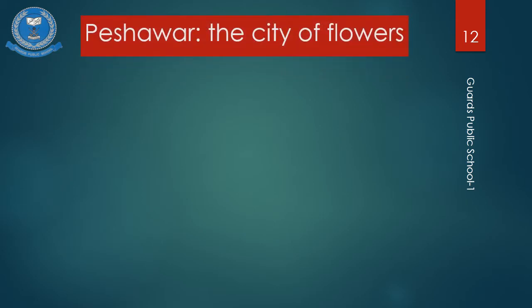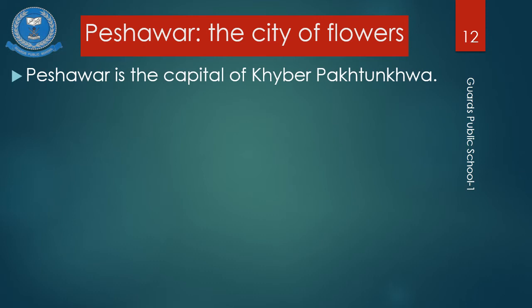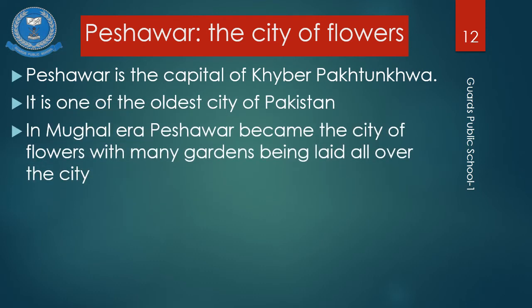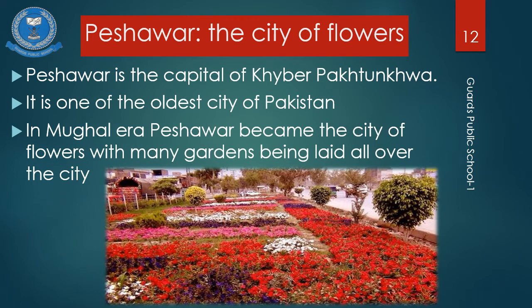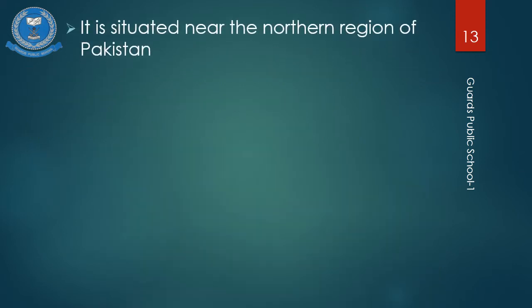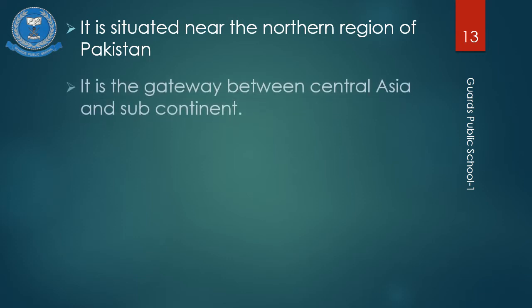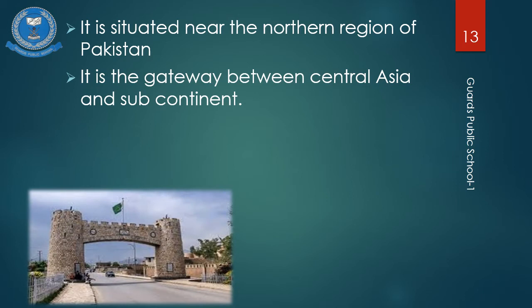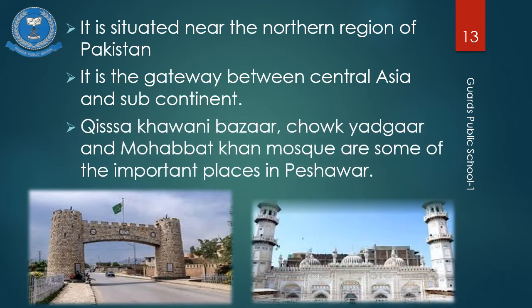Peshawar is called the city of flowers. It is the capital of Khyber Pakhtunkhwa and one of the oldest cities of Pakistan. In the Mughal era, Peshawar became the city of flowers with many gardens laid all over the city. It is situated near the northern region of Pakistan and serves as a gateway between Central Asia and the subcontinent. Qissa Khwani Bazaar, Chowk Yadgar, and Mohabbat Khan Mosque are some of the important places in Peshawar.